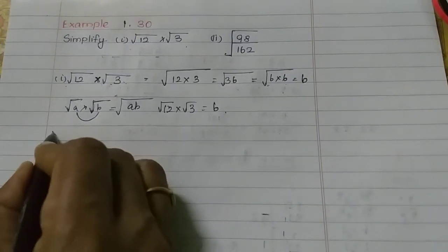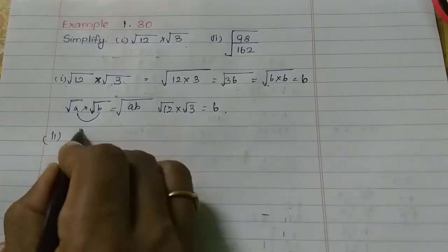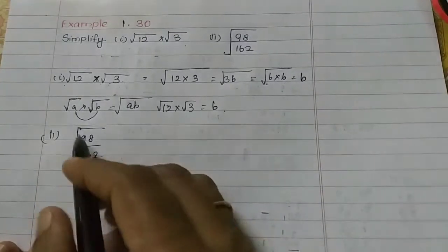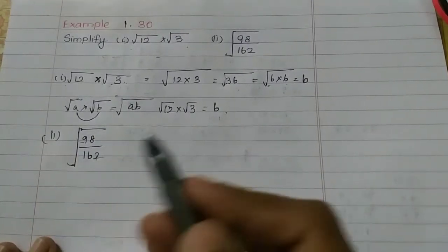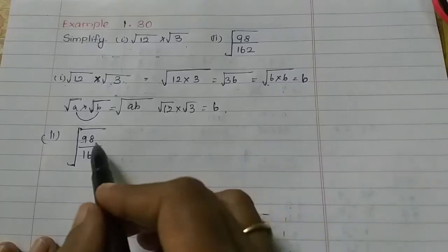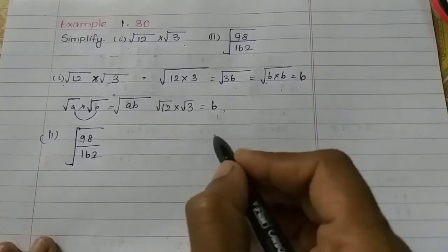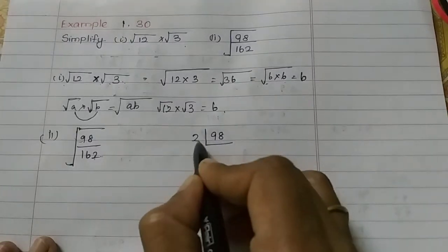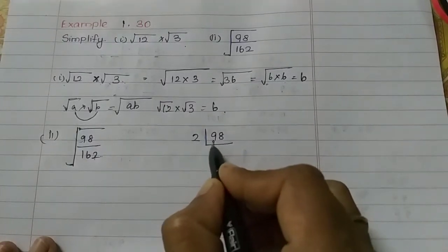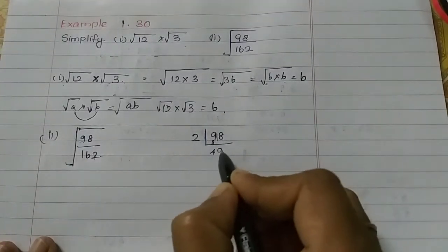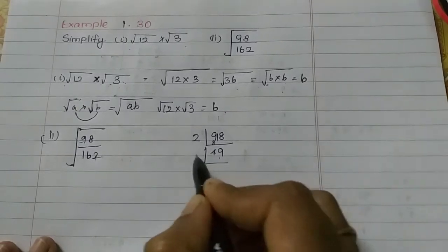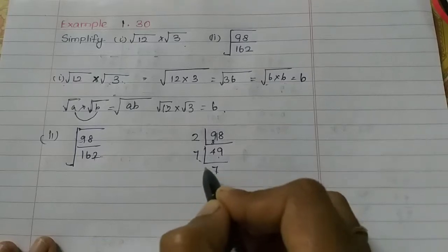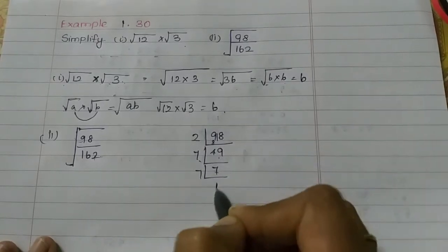The second subdivision: we have root of 98 by 162. We cannot simplify this directly, so we can use prime factorization. Using the 2 times table: 2 fours are 8, balance 1. For 49, 7 is a perfect square — 7 times 7 is 49, divided by 7 is 7, then by 7 again is 1.